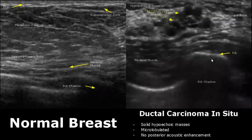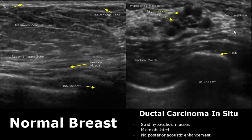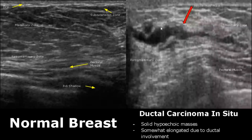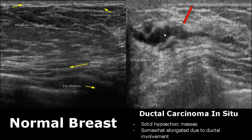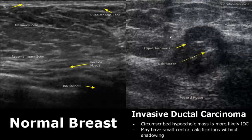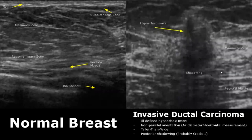The ductal carcinoma in situ will have hypoechoic masses which will be microlobulated — meaning they have outpouchings — and there is no enhancement, meaning it is a solid mass. In this image the mass involves the ducts so it appears elongated. Usually these hypoechoic masses involving the duct are ductal carcinoma in situ. Invasive ductal carcinoma is the most common form of breast cancer; however, it has variable appearances. One of them is a circumscribed hypoechoic mass with some calcifications.